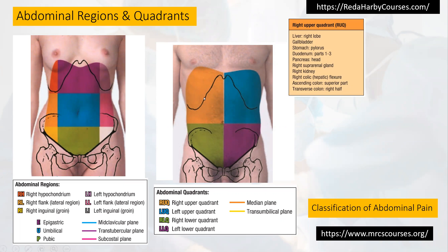So you should think about biliary obstruction, stomach problems, gastritis, peptic ulcer disease, pancreatitis — because the head of the pancreas is there — and the suprarenal gland and the kidney. The kidney pain will be felt more from the flank to the back, as the kidney is a retroperitoneal organ. Also consider the hepatic flexure of the colon, ascending colon, and part of the transverse hemicolon.